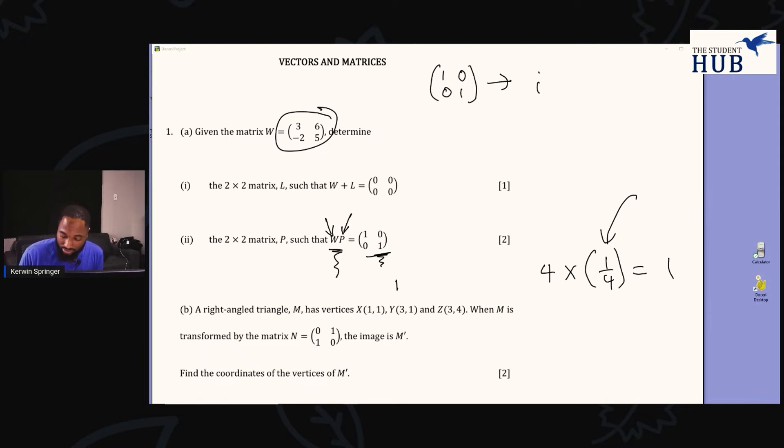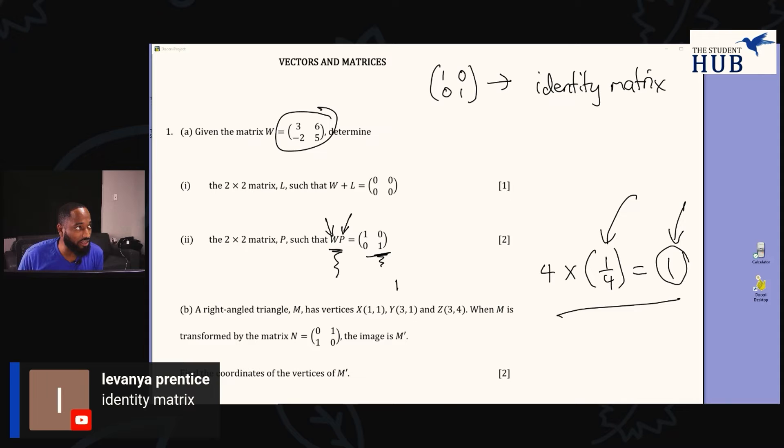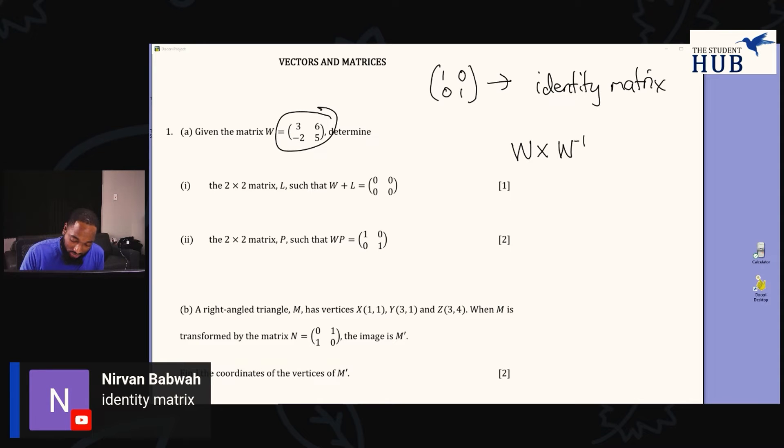This is called the identity matrix—the multiplicative identity, the identity matrix. If you multiply W by W inverse, aka the inverse of the matrix, you will get the identity matrix. So it means that P is the inverse of W.